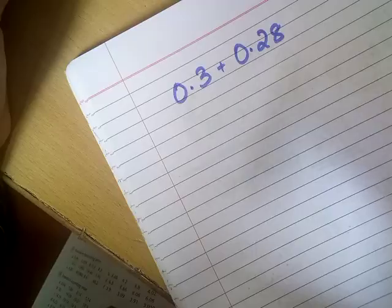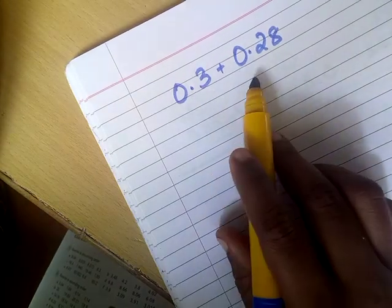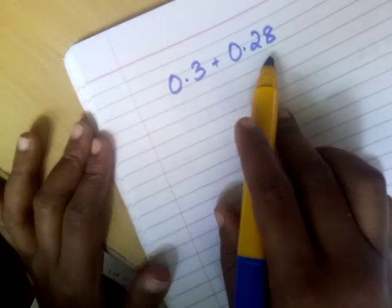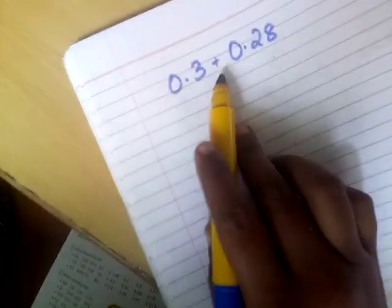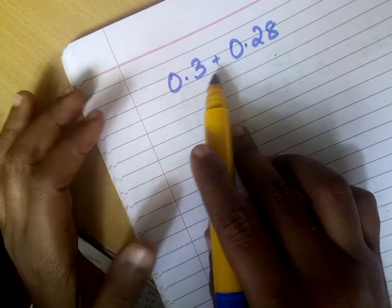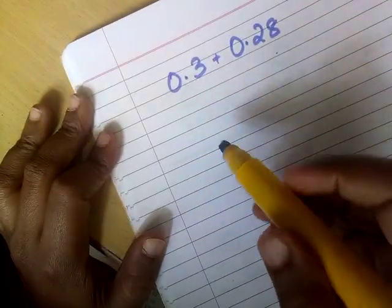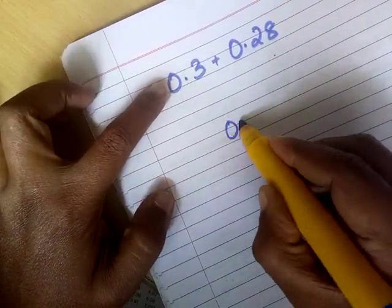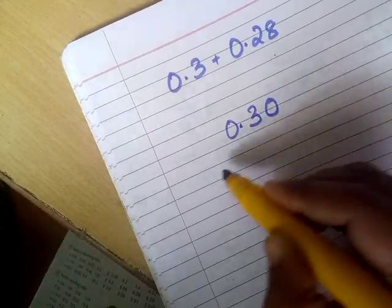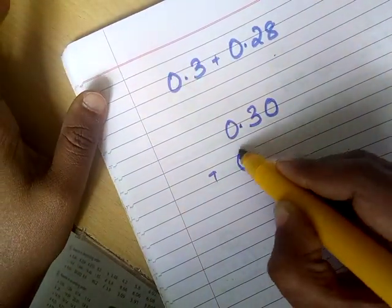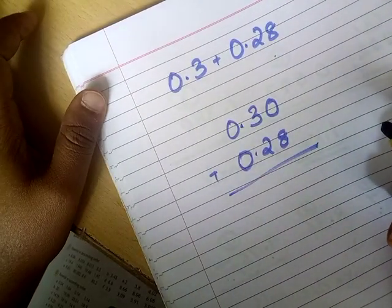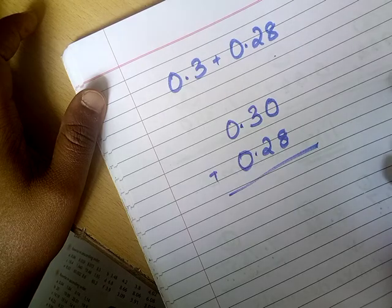We will go for 2 more examples. Now look at this: 0.3 plus 0.28. In the first decimal we have only 1 decimal place, here we have 2 decimal places — they are unlike. So you have to be careful. First make them like decimals: 0.3 becomes 0.30, then plus 0.28. If the decimals are not like, make them like decimals, then go for addition.